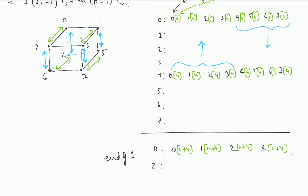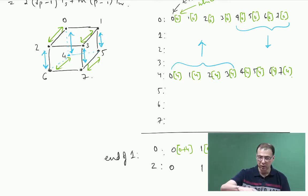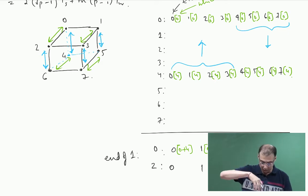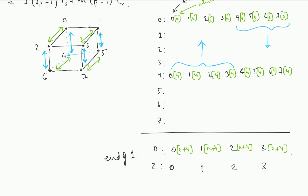Which elements will be on node 2? Elements 0 to 3 — the same 0, 1, 2, 3 will be there. Because if you look at 2 and 6 and take a cut perpendicular to the link joining these two, you separate 0, 1, 2, 3 from 4, 5, 6, 7. Node 2 will have the data for 2 plus 6, for all four elements.